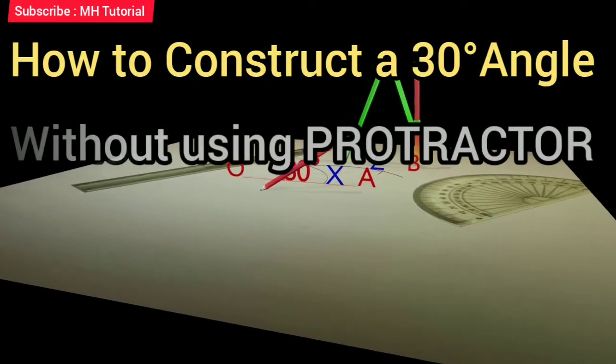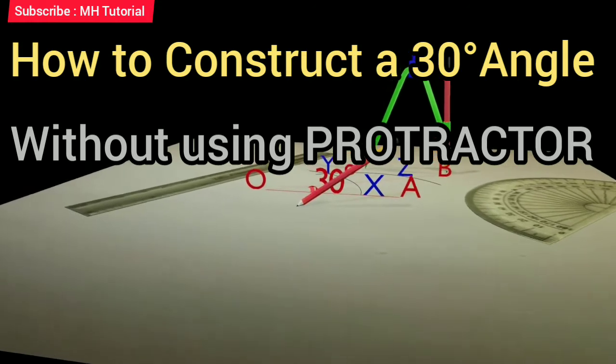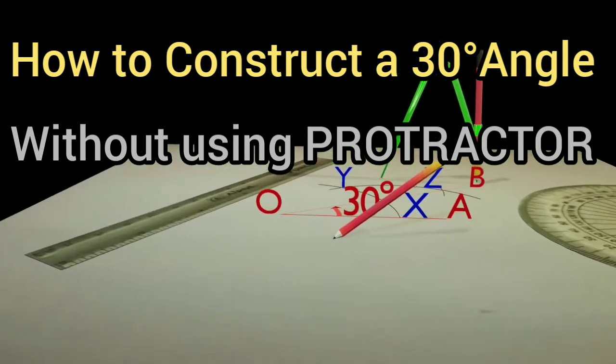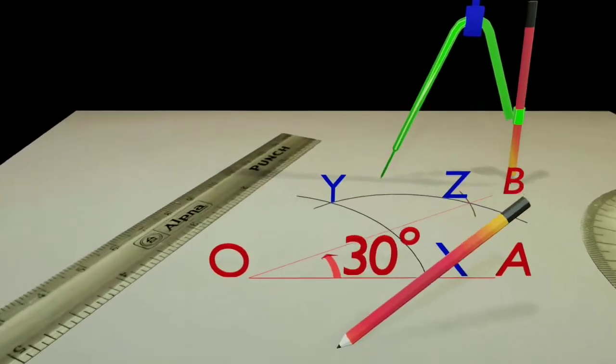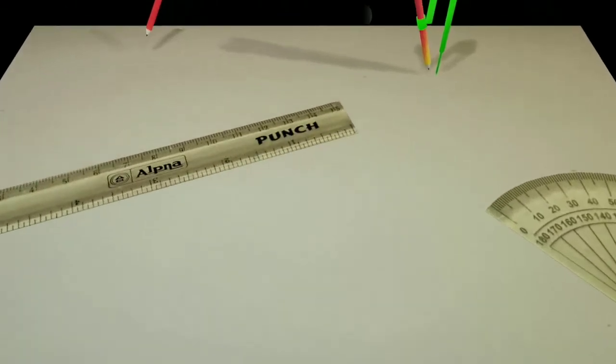How to draw a 30 degrees angle without the help of the protractor. It is necessary to practice this process to solve various construction problems in secondary level school mathematics. In this video we will see all the procedures with animation.